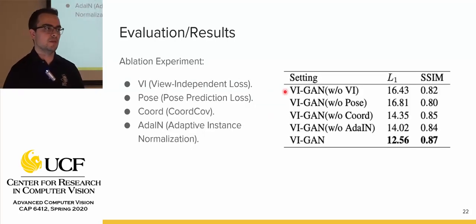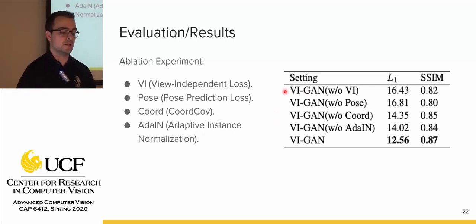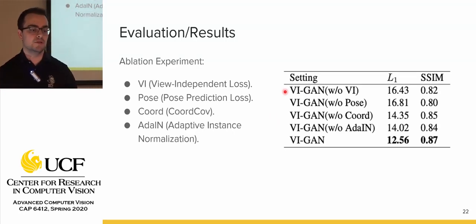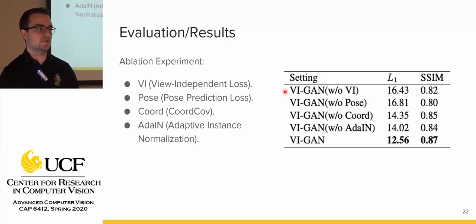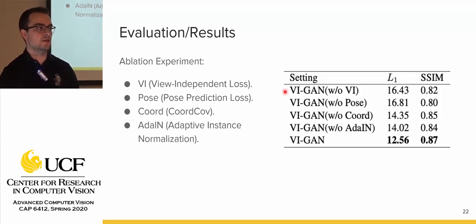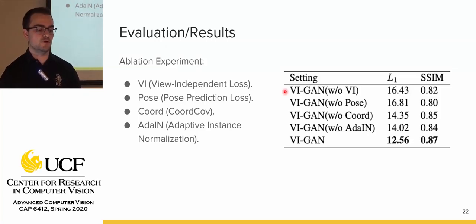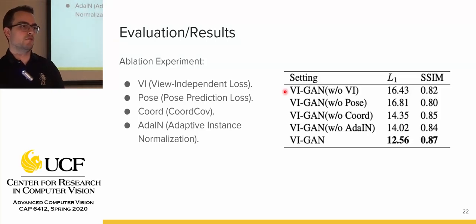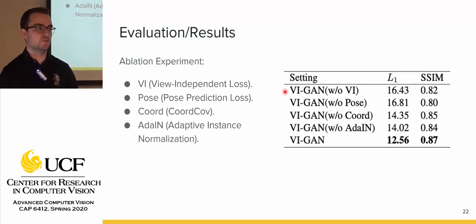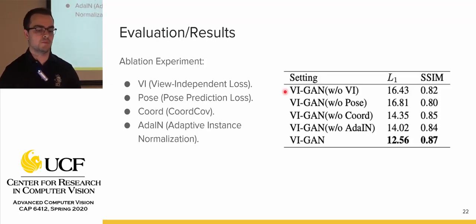The first experiment was an ablation study, where they removed specific optimizations — view-independence loss, pose-prediction loss, coordinate convolution, and adaptive instance normalization — and tested the overall error level. As you can see, removing these optimizations significantly increases the error, demonstrating that each component contributes meaningfully to performance.